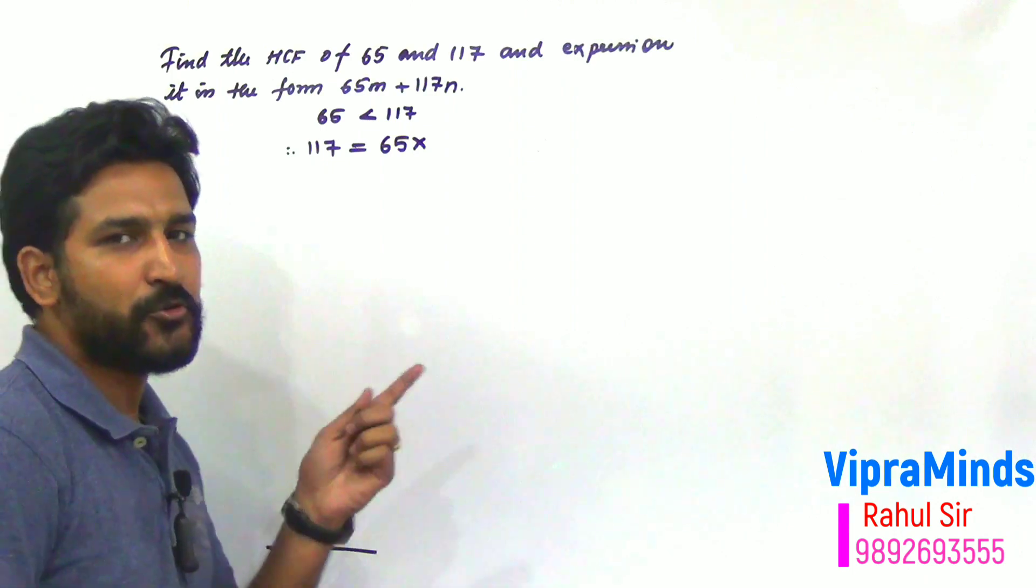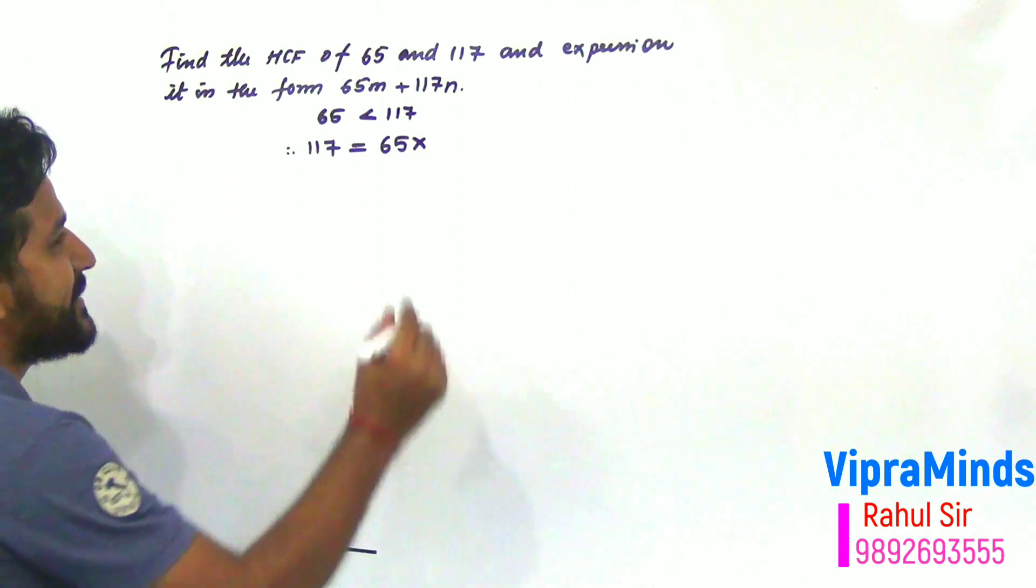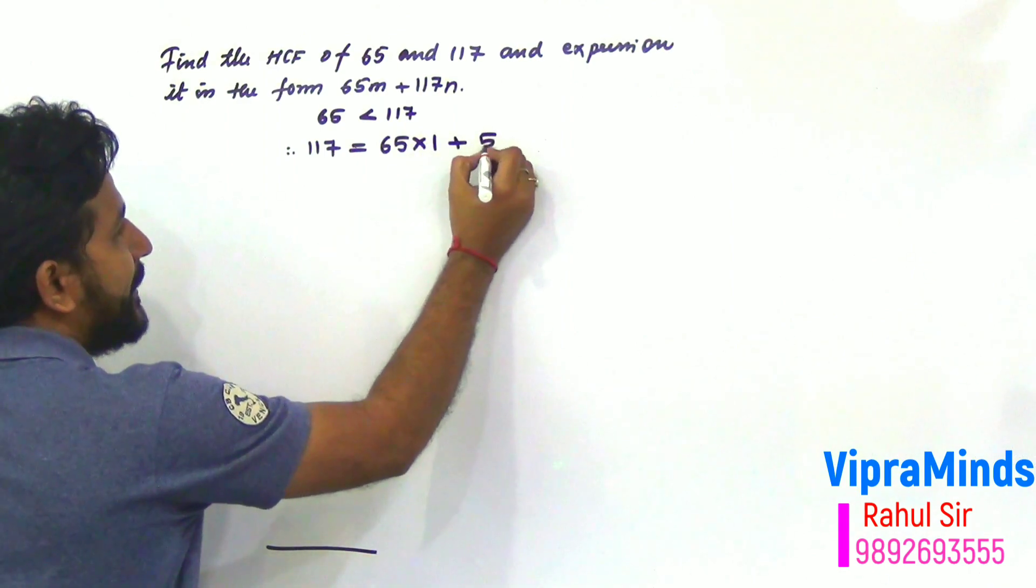Now 65 into 2 is equal to 130, so that will become greater than 117. So, 65 into 1, the remainder will be 52.